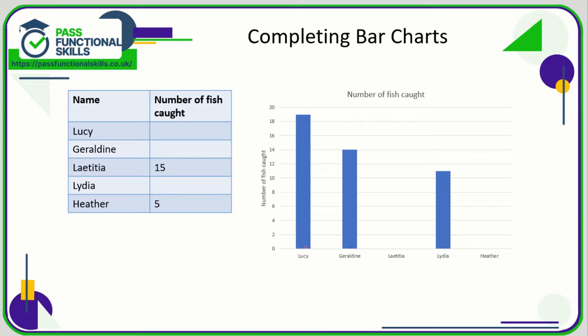Let's go to Lucy's bar — it goes all the way up to here, which is between 18 and 20, so it has to be 19. You can't catch 19.2 fish, so we know it's going to be a whole number. Done.